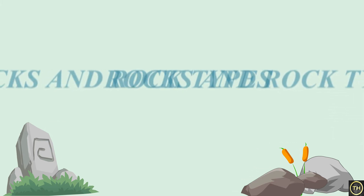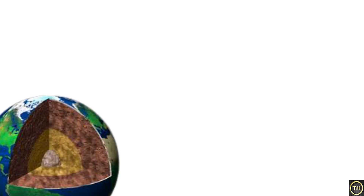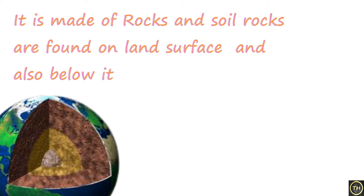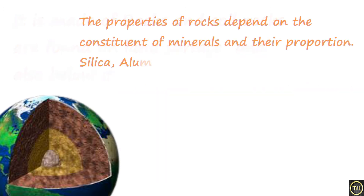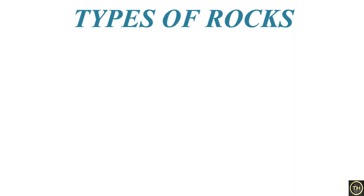Today we are going to learn about rocks and rock types. The Earth's crust is hard — it is made of rocks and soil. Rocks are found on land surfaces and also below it. Rocks are a mixture of different minerals formed by natural processes in the lithosphere. The properties of rocks depend on the constituent minerals and their proportion. Silica, aluminium, magnesium, and iron are the major rock-forming minerals.